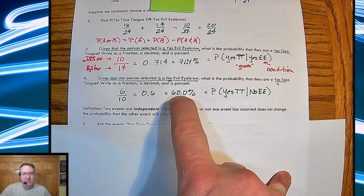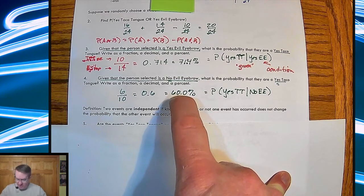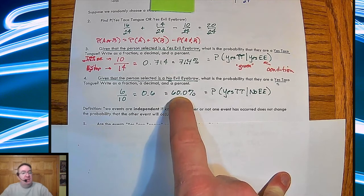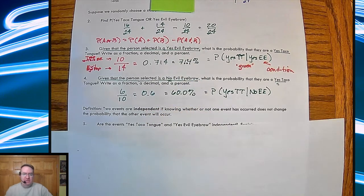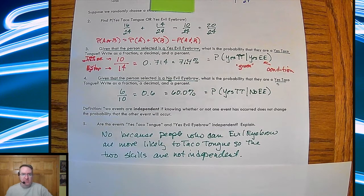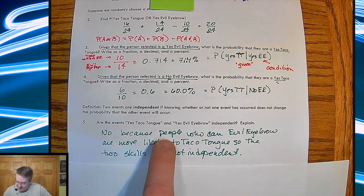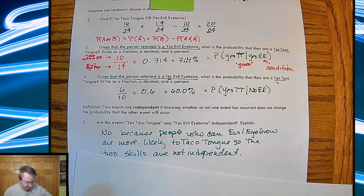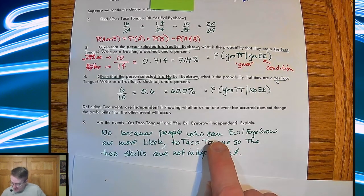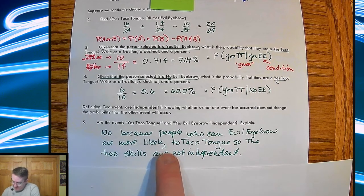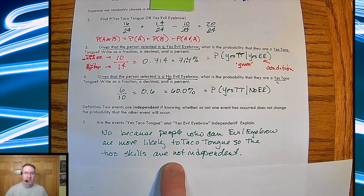So we've got a 71.4% chance that people who can do an evil eyebrow can do the taco tongue. Likewise, down here, now we have a 60% chance that people who can't evil eyebrow can do taco tongue. So since those numbers are not the same, it's not going to be independent. So the way that I wrote that out is this. No, because people who can taco tongue, can evil eyebrow are more likely to taco tongue. So the two skills are not independent.